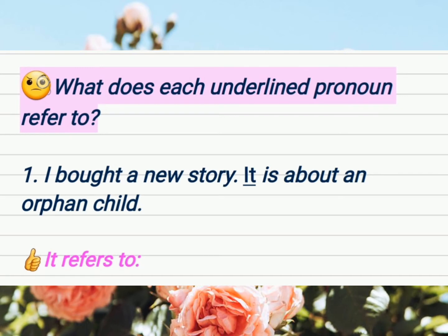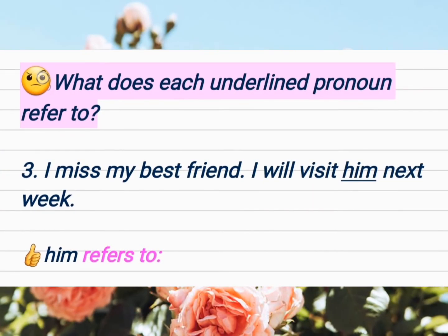Let's solve more exercises. What does each underlined pronoun refer to? 'I bought a new story. It is about an orphan child.' The underlined pronoun is 'it.' Ask yourself: what is about an orphan child? The new story. So 'it' refers to 'a new story.' Instead of repeating 'a new story,' we use the pronoun 'it.'